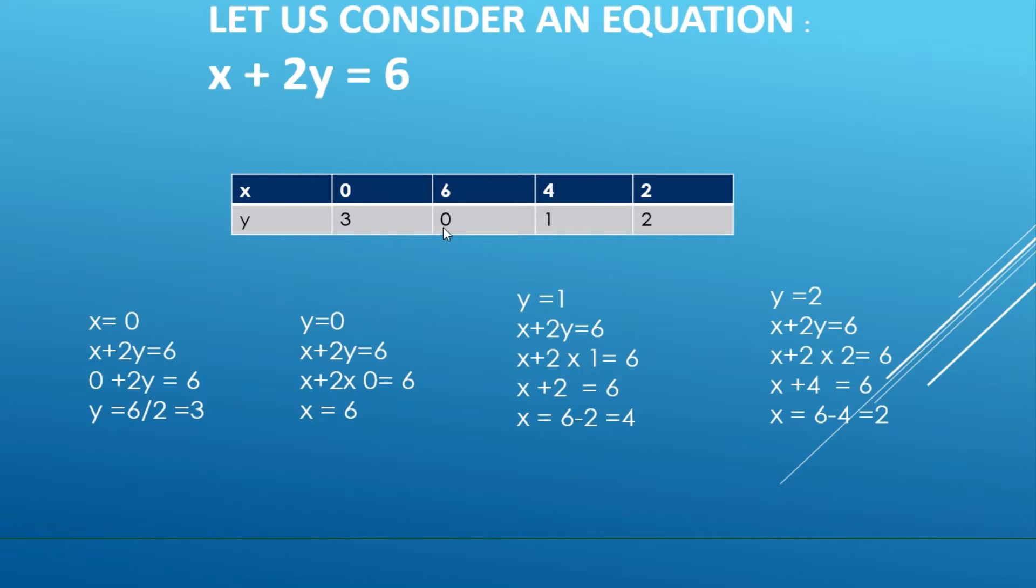Similarly, now you put y equal to zero. Most of the questions it is easy to do with that. I put y equal to zero, so x plus two times zero equals six. So this becomes zero, so x equals six. You get the value of x equal to six.